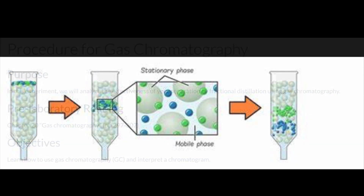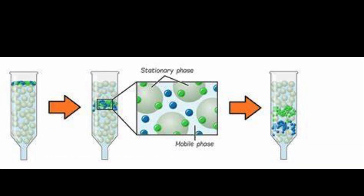The main idea of chromatography is that we have some mixture in one state of matter moving over the surface of something else in another state. The moving substance is called the mobile phase and the substance that stays put is the stationary phase. As the mobile phase moves, it separates out into its components on the stationary phase.